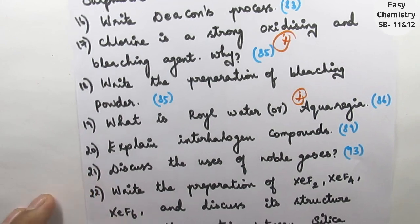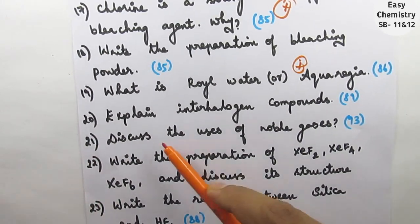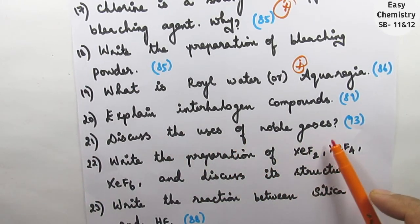Question 20: explain interhalogen compounds. Next, discuss the uses of noble gases. Question 22.